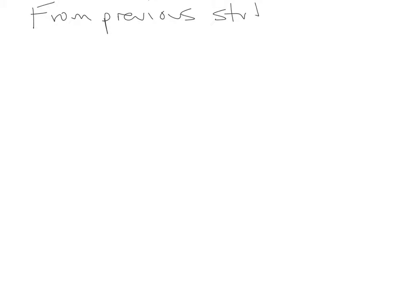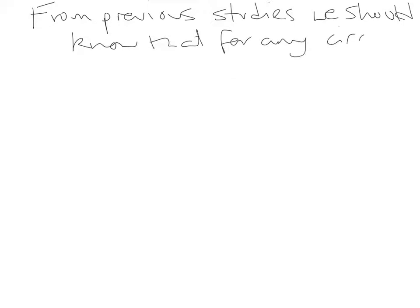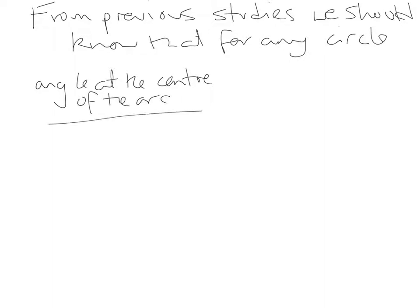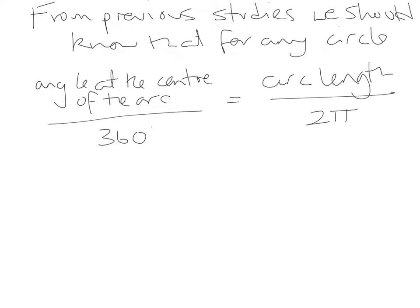From previous studies, we should know that for any circle, we have the angle at the center of the arc divided by 360 degrees equal to the arc length divided by 2 pi r. That formula comes from circle theory and angle theory at intermediate to standard grade or National 5 maths. If you haven't seen it before, don't worry — this is really just the proof to show you a way of relating radians and angles to each other.